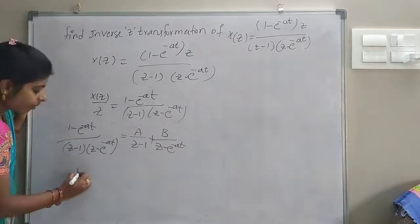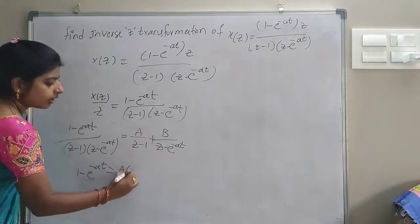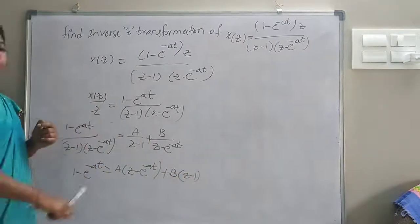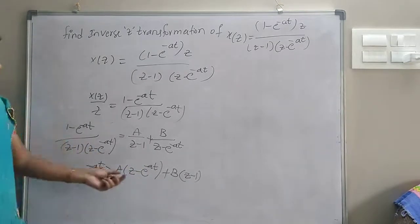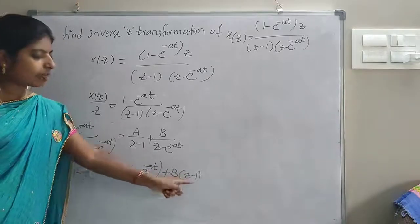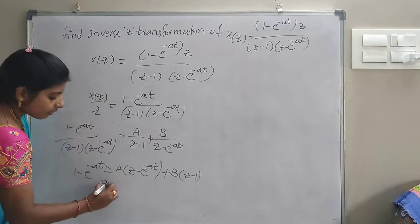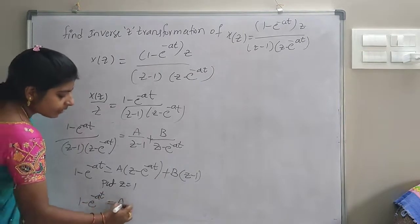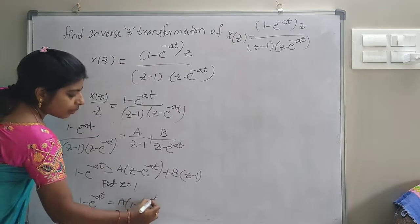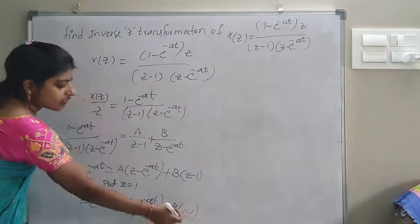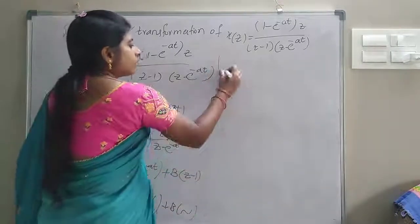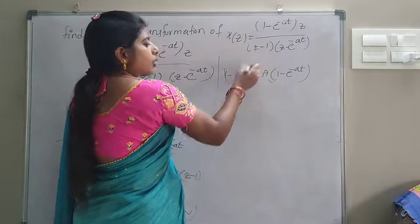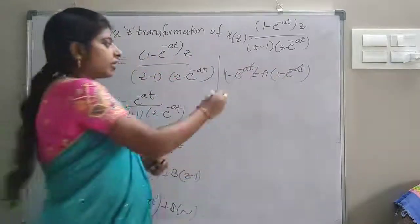After partial fraction simplification: (1 minus e^(-AT)) equals A times (Z minus e^(-AT)) plus B times (Z minus 1). Now we find the value of A. Put Z equal to 1: (1 minus e^(-AT)) equals A times (1 minus e^(-AT)). Cancelling (1 minus e^(-AT)) from both sides, therefore A equals 1.